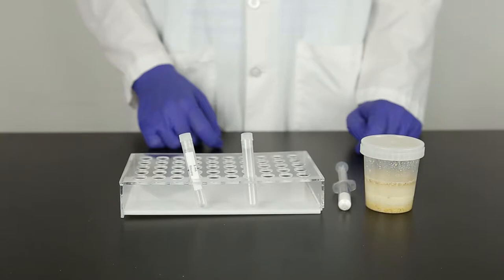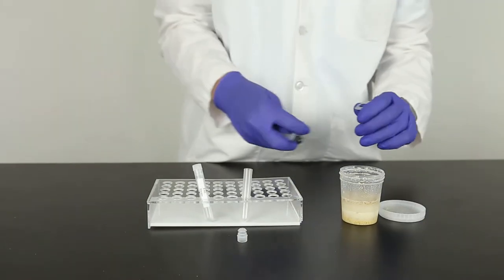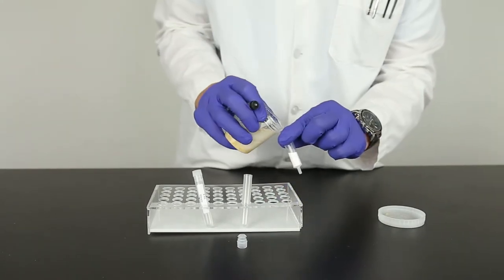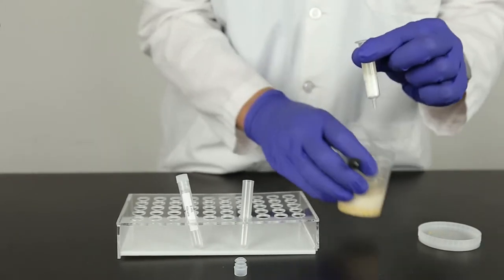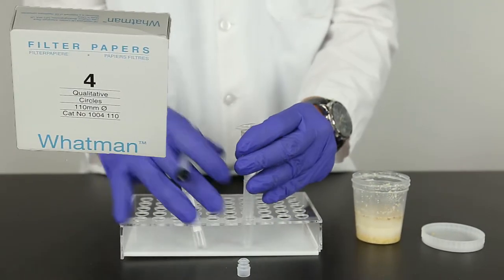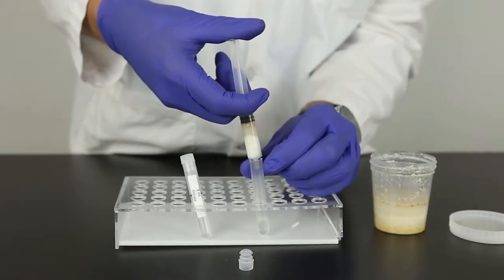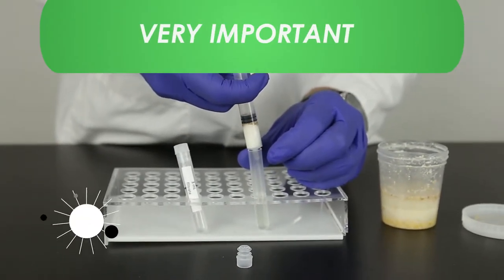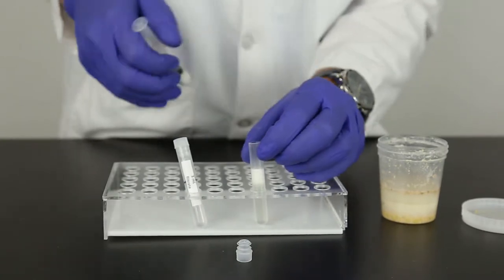Allow the sample to settle for a few minutes, then filter the extract using a filter syringe. You may also use Whatman number 4 filter or a microcentrifuge. It is very important to collect a minimum of 3 milliliters of filtrate into the sample collection tube for accuracy of results.